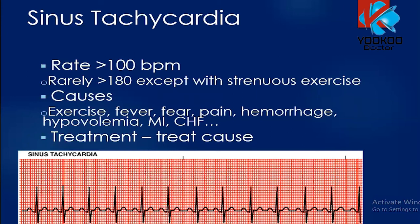Sinus tachycardia is when the rate is more than 100 beats per minute. We call it sinus because the rate is not extremely high and the rhythm is regular with visible P waves and a P wave before each QRS. Causes include exercise, fever, fear, pain, hemorrhage, myocardial infarction, or heart failure. Treatment is to address the underlying cause.